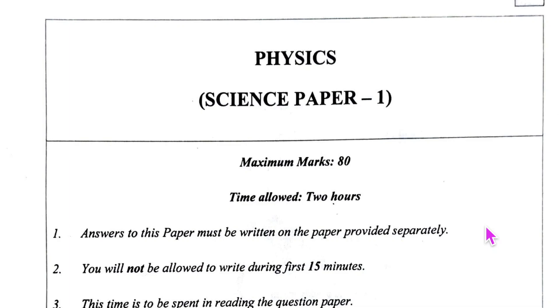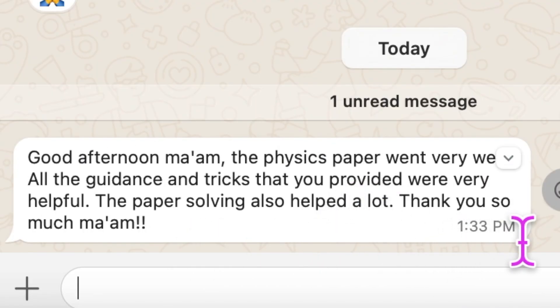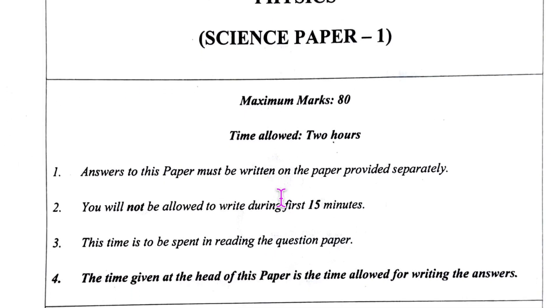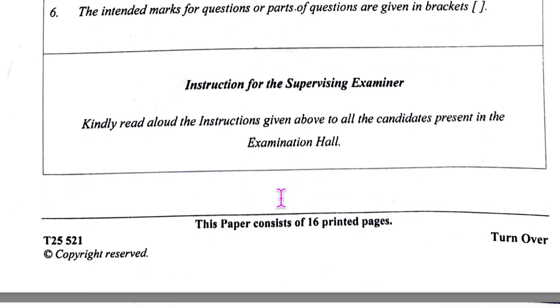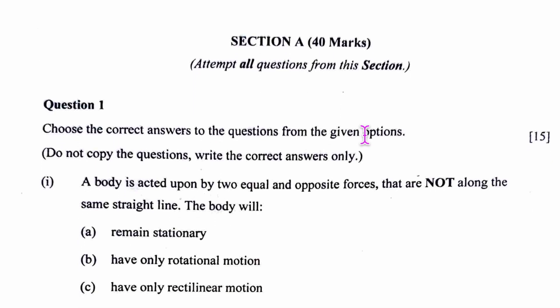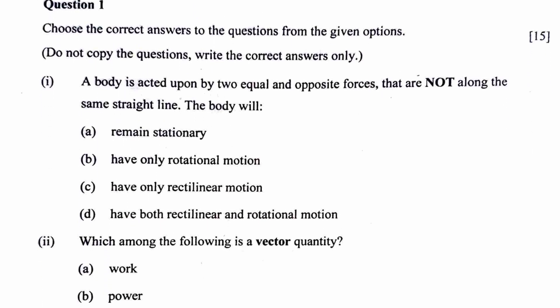The 2025 board paper of physics is in my hand and this is what my students have shared. Can you see this? It's wonderful. Let us look at the paper. We know that the paper is made of two sections, Section A, which is 40 marks. Question number one will be MCQ, so let us look at question one MCQs. Choose the correct answers from the options.